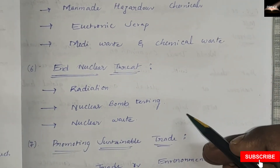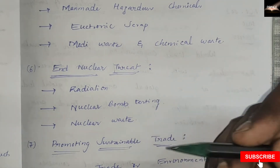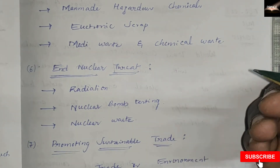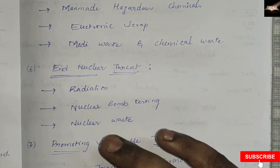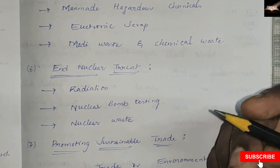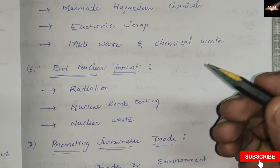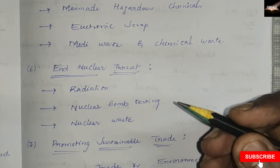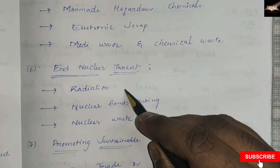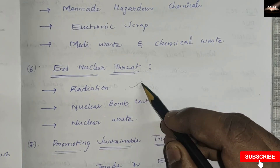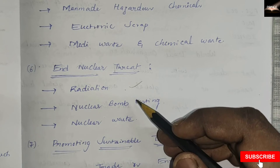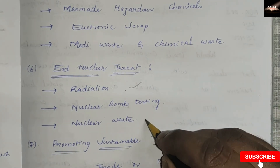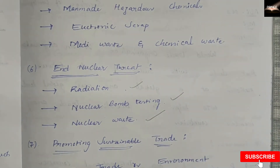Greenpeace addresses the nuclear threat. The nuclear age began in July 1945 when the US tested their first nuclear bomb, and the use of nuclear power has never been peaceful. Radiation released into the environment has led to contamination of soil, air, rivers, and oceans, causing cancer and other diseases. Greenpeace campaigns to end nuclear power, reprocessing, waste dumping, and nuclear bomb testing.